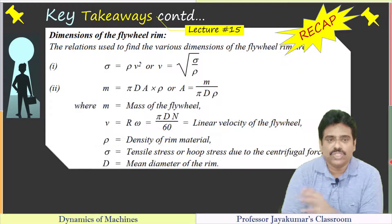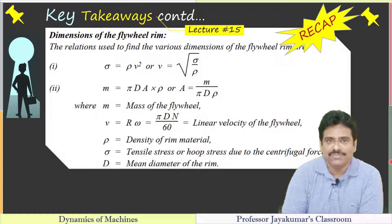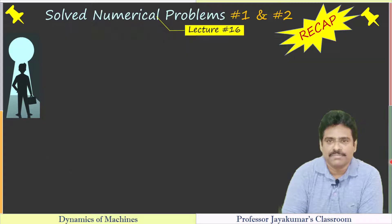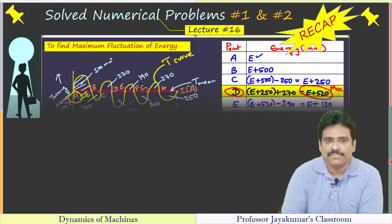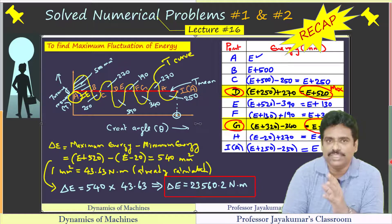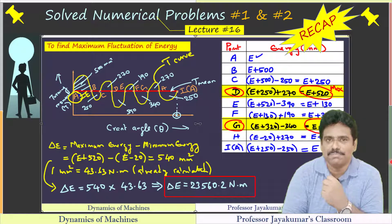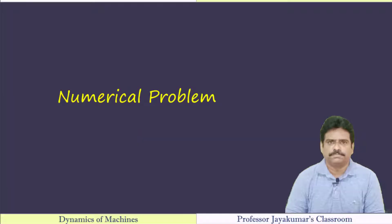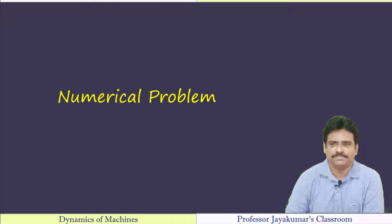We have the energy stored in a flywheel expression: delta E equals I·omega²·Cs, which equals m·k²·omega²·Cs, using which we can determine mass, radius of gyration, or coefficient of fluctuation of speed. These are the expressions used to determine various dimensions of the flywheel rims — this is what we covered in our previous lecture, where we solved two numerical problems under Type 1.